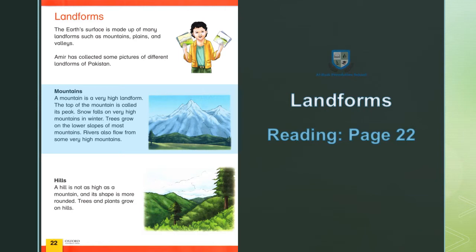The top of the mountain is called its peak. Bilkul upar mountain — pahar, called kehte hain — peak, choti. The top of the mountain is called its peak. Pahar ka bilkul upar wala hissa pahar ki choti kehlaata hai.